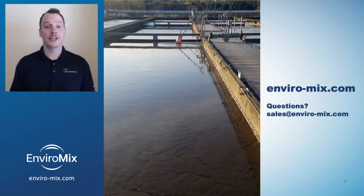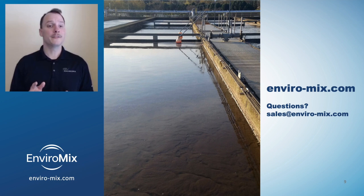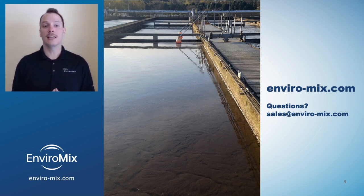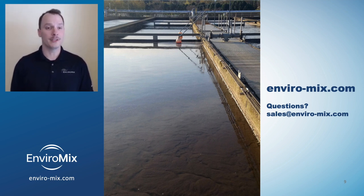Plants looking to achieve EBPR should follow the approach we just discussed. However, there are many plants with anaerobic selectors that still struggle with effective phosphorus removal. In the next video, we'll look into how a VFA shortage can limit EBPR and learn how plants can produce additional VFA using a process called fermentation. Thanks for watching.